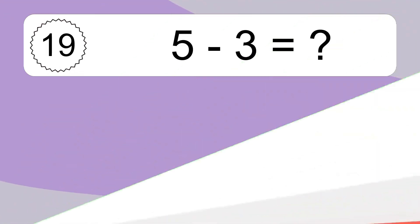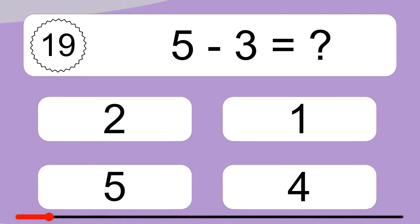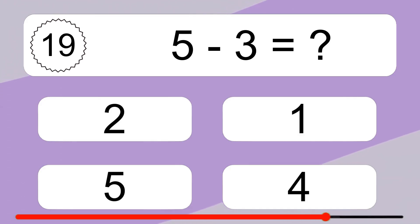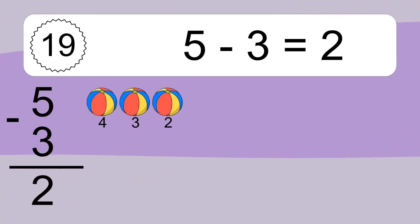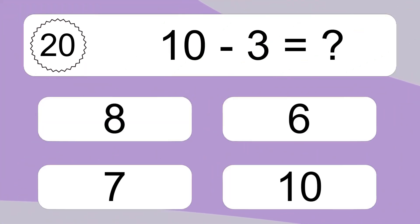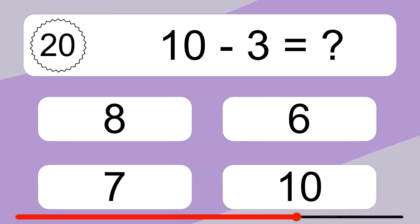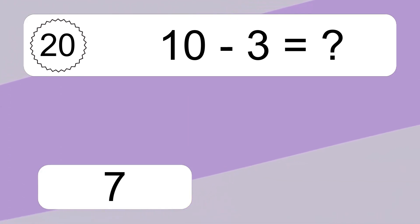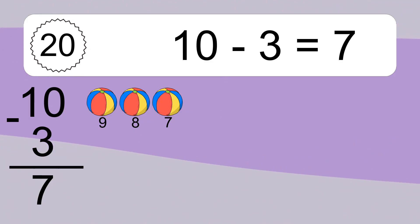5 minus 3 equals what? 5 minus 3 equals 2. Let's count it: 4, 3, 2. 10 minus 3 equals what? 10 minus 3 equals 7. Let's count it: 9, 8, 7.